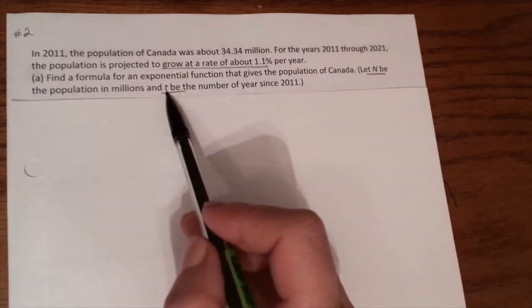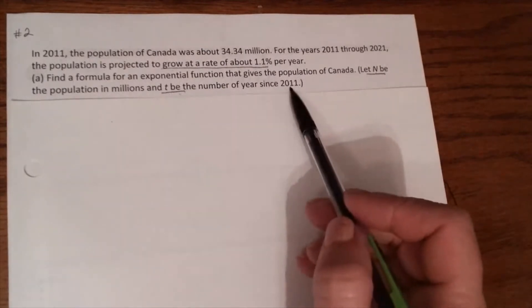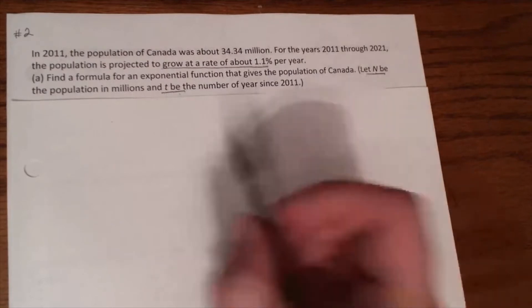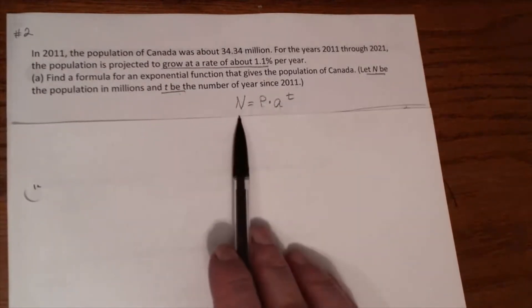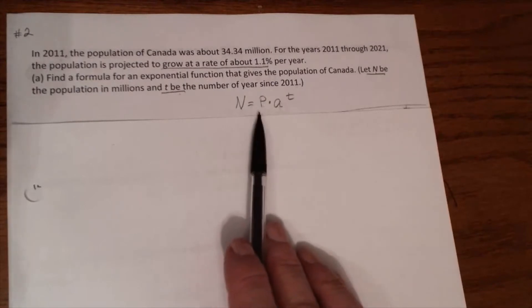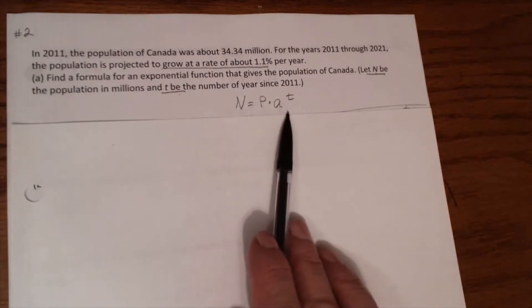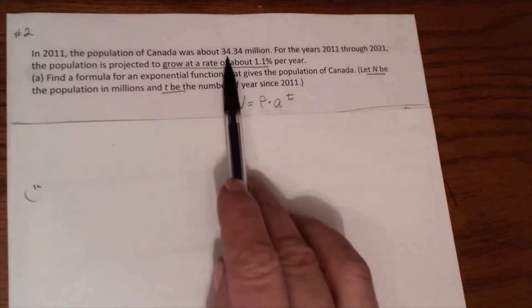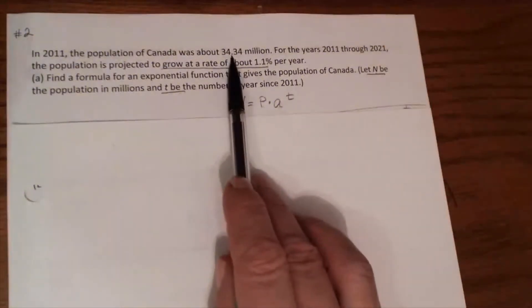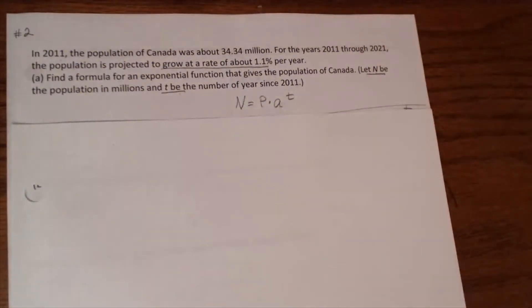Now we will write the exponential equation: N equals P times a to the T power. P is the initial value. Do we know the initial value? Yes. The initial value is 34.34.